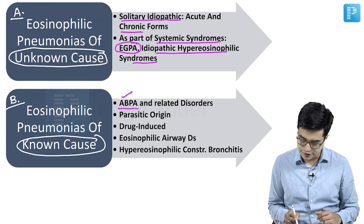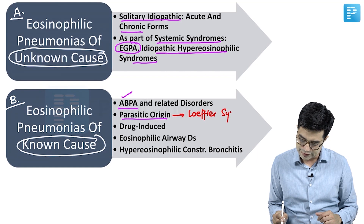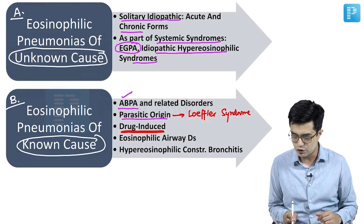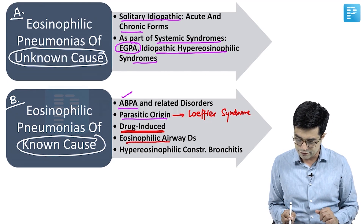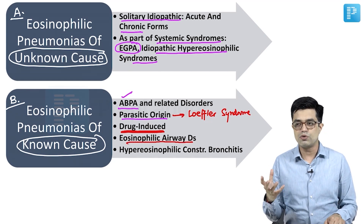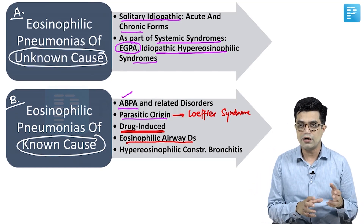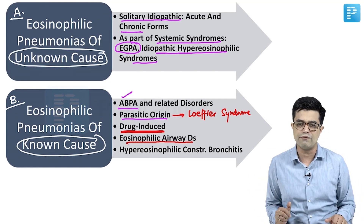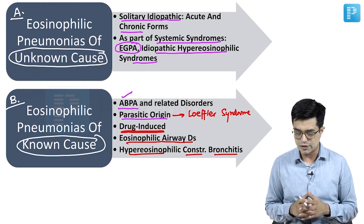Then we have eosinophilic pneumonias of parasitic origin; the typical example is Loeffler syndrome. Drug-induced eosinophilic pneumonias are typically produced by non-steroidal anti-inflammatory drugs. There is also eosinophilic airway disease, which is a spectrum: you can have localized eosinophilic asthma, hypereosinophilic asthma, or an asthma-like condition called eosinophilic airway disease. Hypereosinophilic constrictive bronchitis is also included in this category.